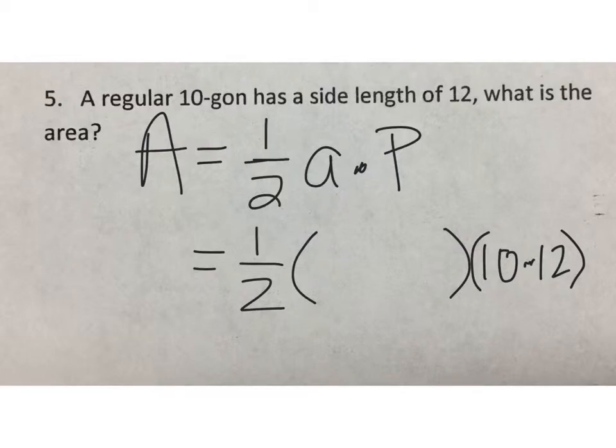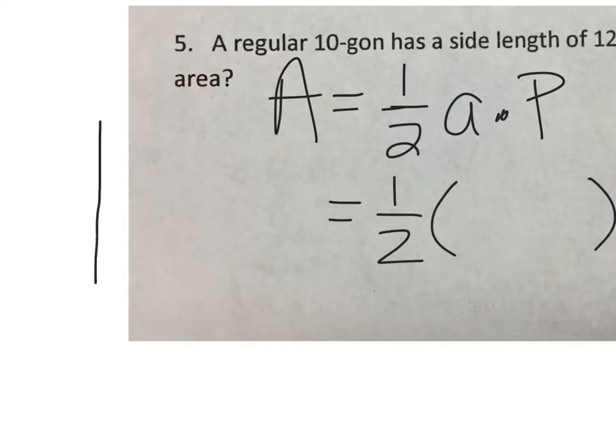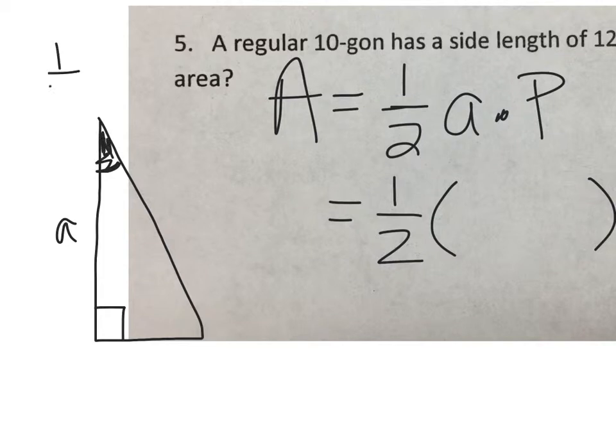Now, the question is, what is the apothem? To do this, we're going to set up our nice trig right triangle for a decagon, where this is the apothem, and this angle is half of the central angle.